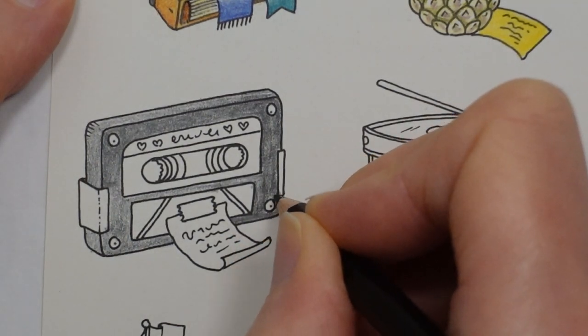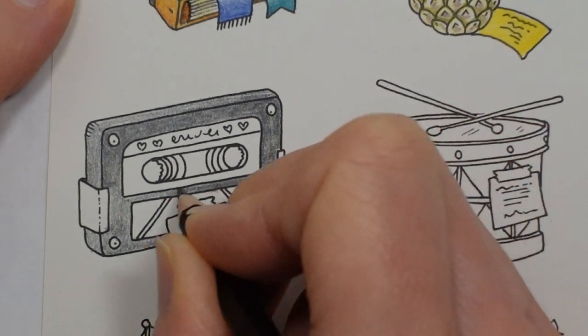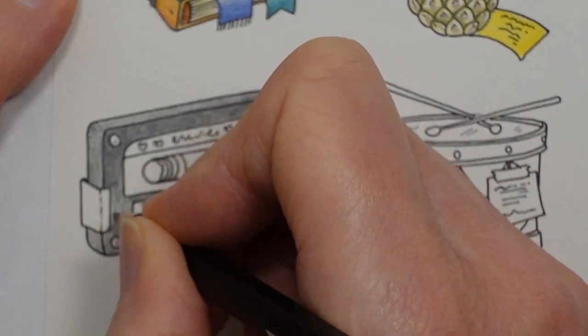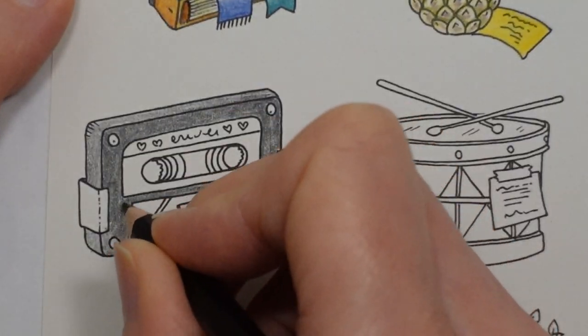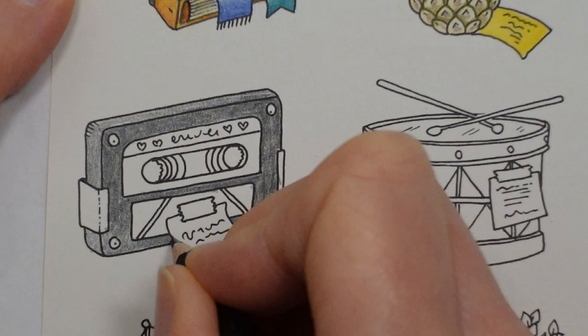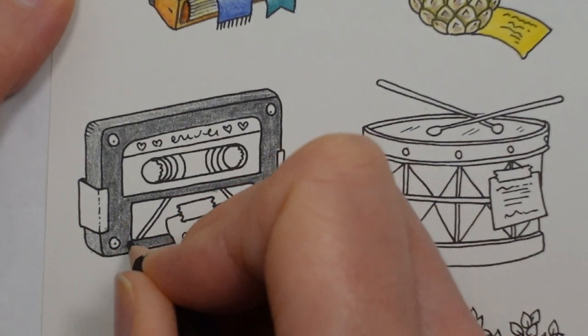So you can see that this is darker than just the one layer. It takes patience to layer up. It can be tempting to just push hard to get a darker colour and that does work but we have to be a little bit careful that we don't damage the paper or the pencil.